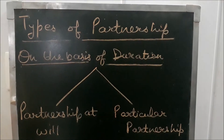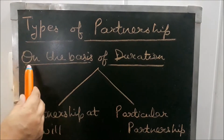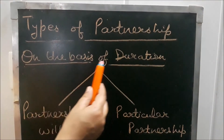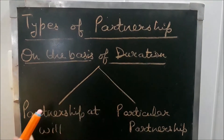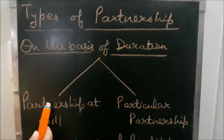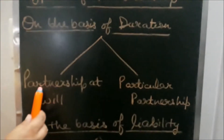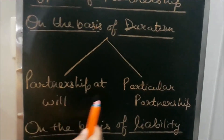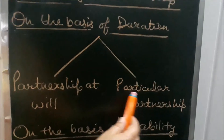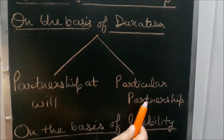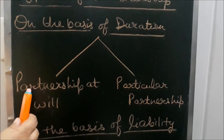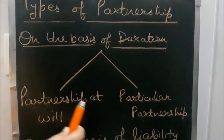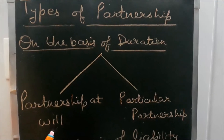On the basis of duration, partnership can be of two types: first is partnership at will, and second is particular partnership. We will firstly discuss partnership at will.